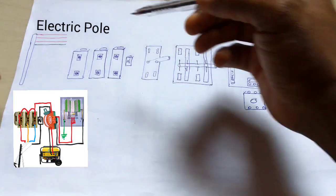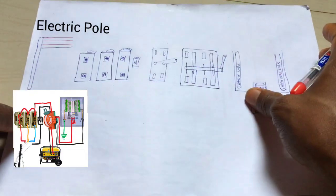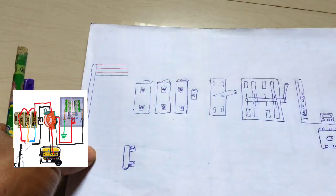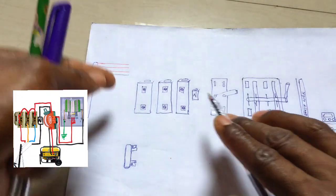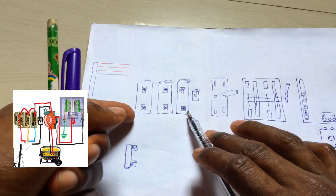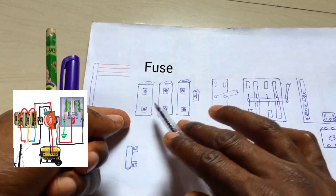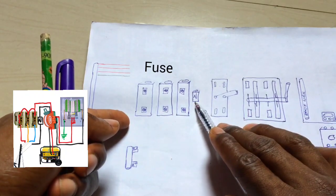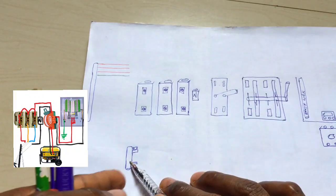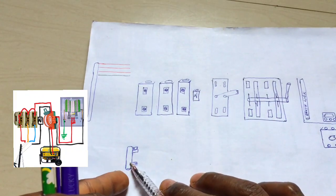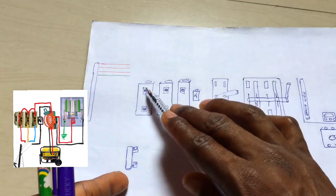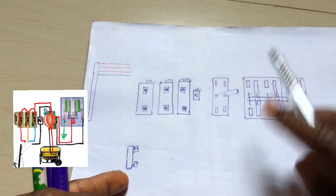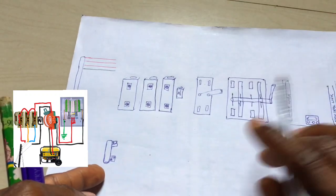We're going to start from the electric pole. At the electric pole we have three hot lines and one neutral. This point is a fuse point — these are the three-phase fuse points. There is a neutral link, and this is the cover — this is the fuse itself that will be covering these points.